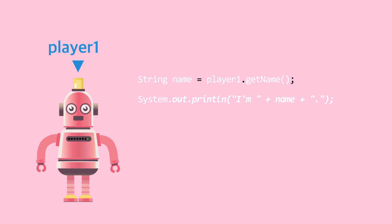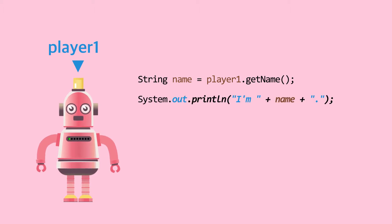We can use methods of the object. Let's getName of player1 and assign it to a variable name. Then let's print it — I'm Ada.